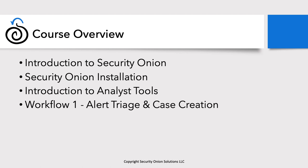The first workflow is alert triage and case creation. You log into Security Onion, look at your alert queue, and triage — working through whether or not this is a legitimate issue. If you decide it is an issue, you escalate that into a case.